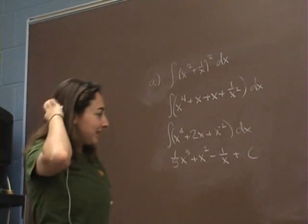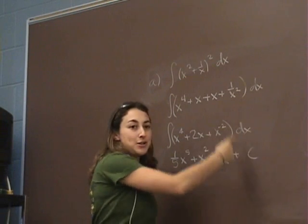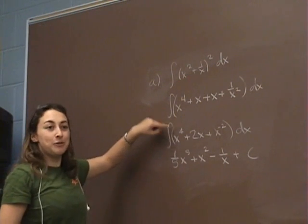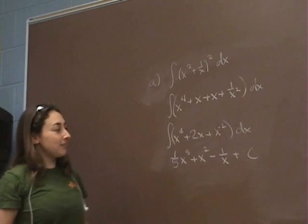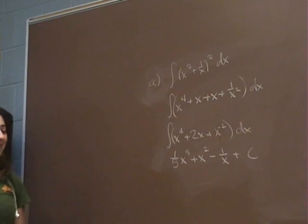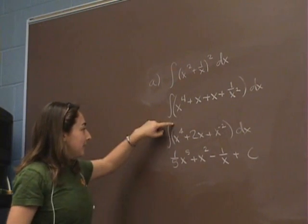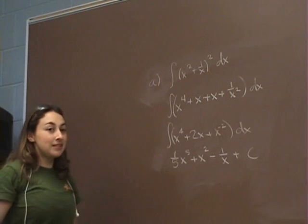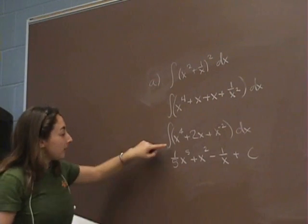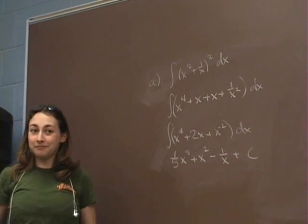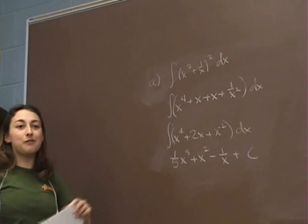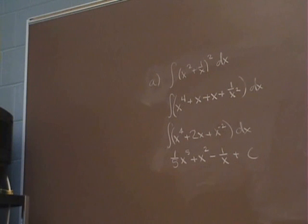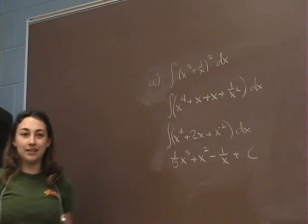So the integral becomes x to the negative 2 plus x squared minus 1 over x plus c. How many of you forgot your plus c's? You do not put an evaluation bar if there's nothing to evaluate. I saw three of those mistakes. When there's nothing to evaluate here, that means find an anti-derivative. When there are numbers here, that means find the area under the curve.